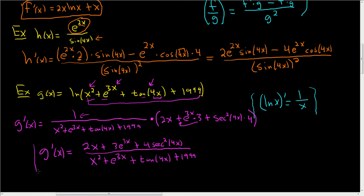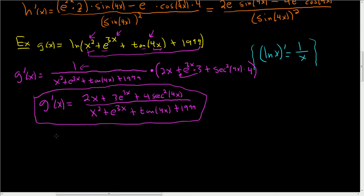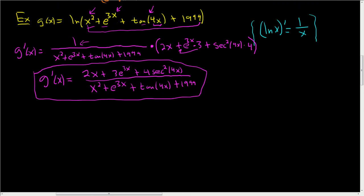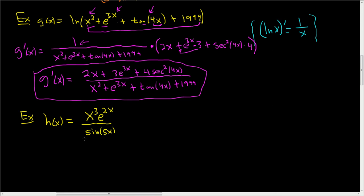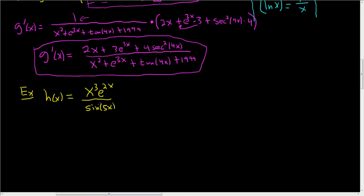That's the derivative of g. Let's do another one. h of x equals x cubed e to the 2x over sine of 5x. This is going to be pretty brutal — we won't simplify the answer. There are a couple of ways to do this; let's go ahead and use the quotient rule. This one's going to be a little bit messy.